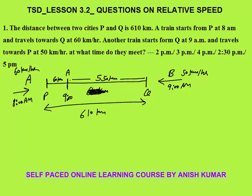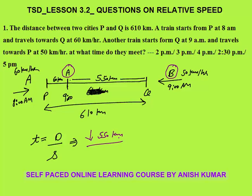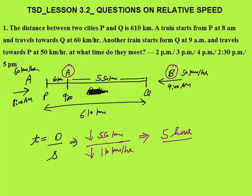The question now becomes: two trains are running in opposite directions simultaneously, at what time do they meet? Time equals distance divided by speed. We need to reduce the gap of 550 kilometers. The relative speed of two objects moving in opposite directions is 60 plus 50 equals 110 kilometers per hour. So time is 550 divided by 110, which is 5 hours. 9 AM plus 5 hours gives the answer: 2 PM.